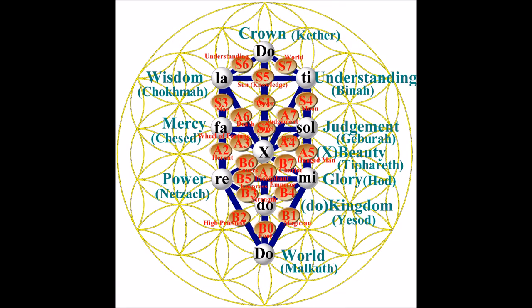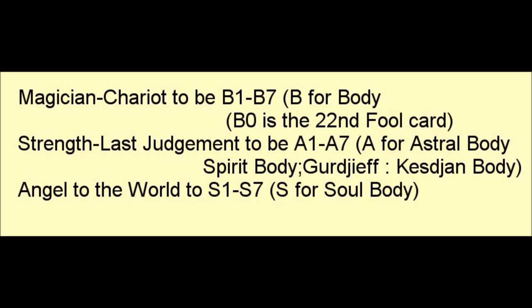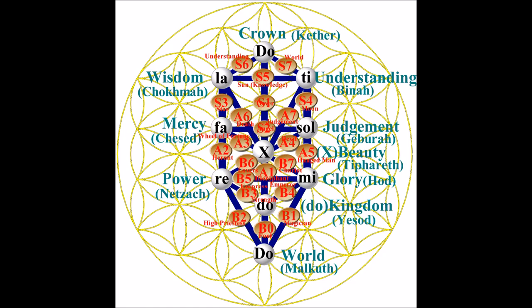Here is my complete diagram. To emphasize the major arcana as representing three bodies, I have notated three sets of 21 cards as follows: Magician to Chariot will be B1 to B7 (B for body), and B0 will be the 22nd fool card. Strength to Last Judgment will be A1 through A7 (A for astral/spirit body, Gurdjieff Kesdjan body). Angel to World, 1 to 7, is S for soul body. So you can see S6 and S7 at the top, and B1, B2, and B0 at the bottom, with the notes Do, Re, Mi, Fa, Sol, La, Ti.